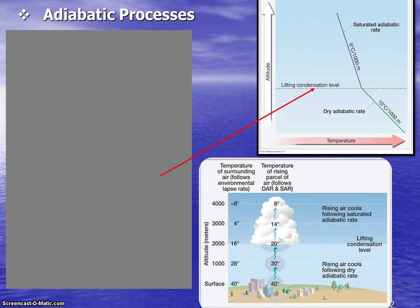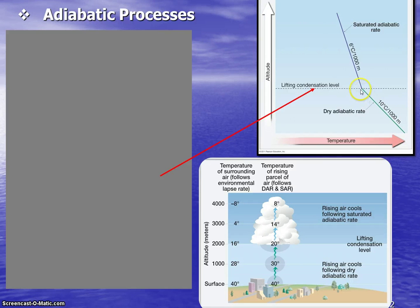In this video we continue taking a look at some of the concepts from chapter 6 on atmospheric moisture. The concept we're focusing on is the adiabatic processes, which tell us how air cools and warms at a standard rate as it increases in elevation and also as it descends.